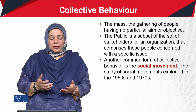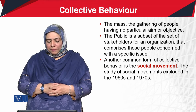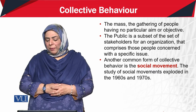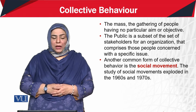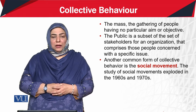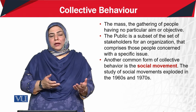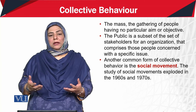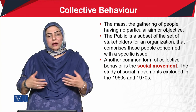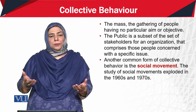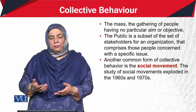Now, what is called the mass? The mass is the gathering of people having no particular aim or objective. For example, people seen moving around somewhere — like people walking through a bazaar who have no specific purpose or aim — but we can observe a group movement of people gathered together around us.